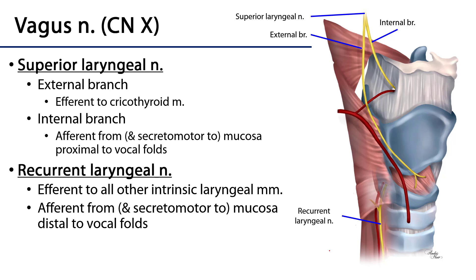Now let's take a look at the nerves which serve the larynx. Here we have the middle pharyngeal constrictor, which is associated with the hyoid bone. Below that we have the inferior pharyngeal constrictor, which has two parts: the thyropharyngeal part associated with the thyroid cartilage, and the cricopharyngeal part associated with the cricoid cartilage. These will have some relevance to the nerves we're discussing.